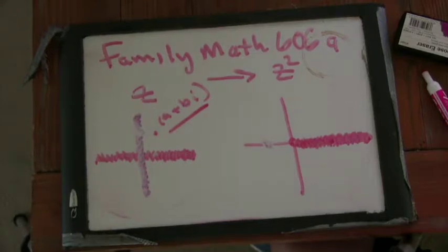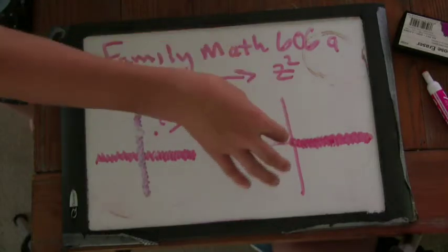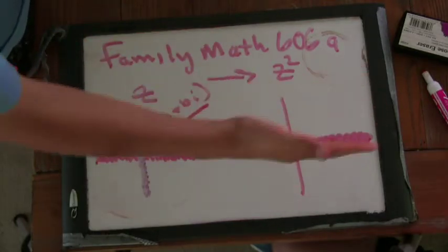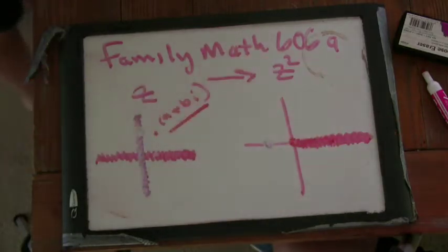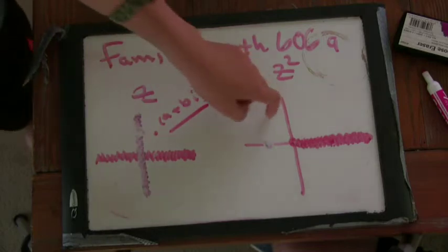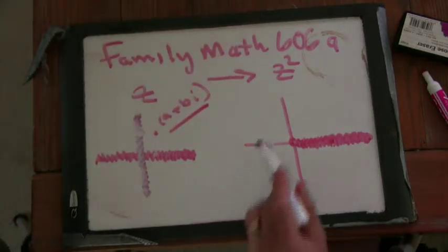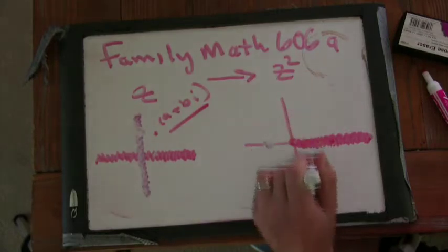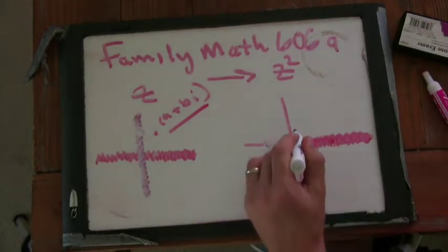And then that means that all the imaginary numbers that are higher than the real axis, it looks like they go to the negative numbers. Okay. Well, we've got to be careful. We're only looking at the imaginary axis. So we're not looking at all the numbers. Yeah, but I mean just the imaginary numbers. The imaginary numbers.